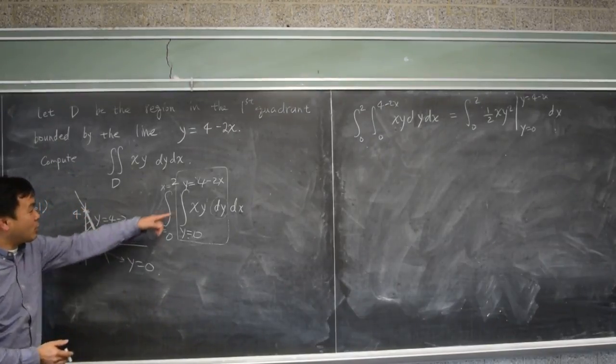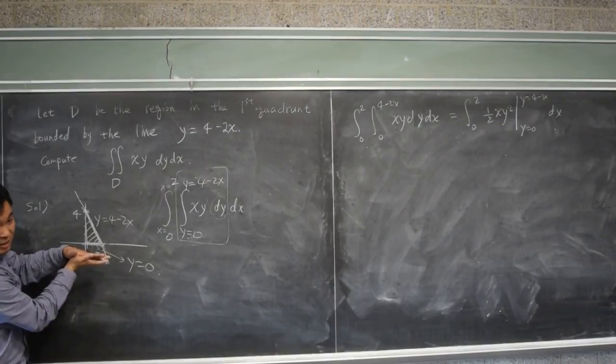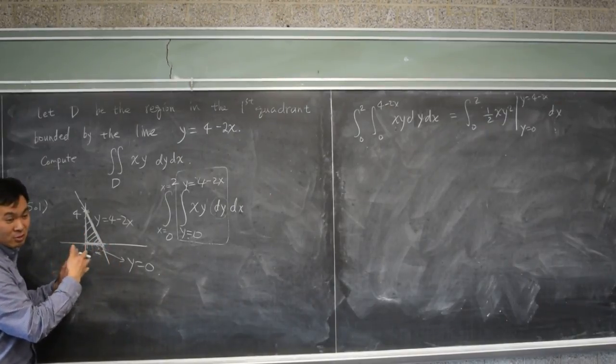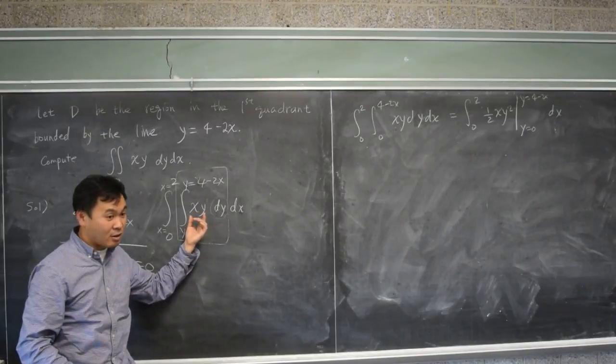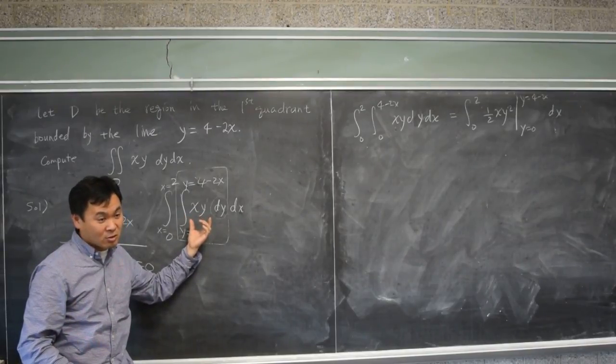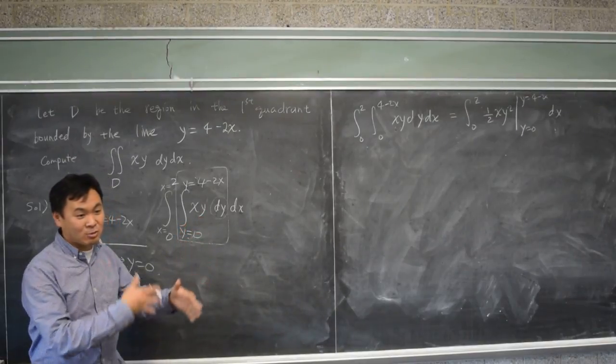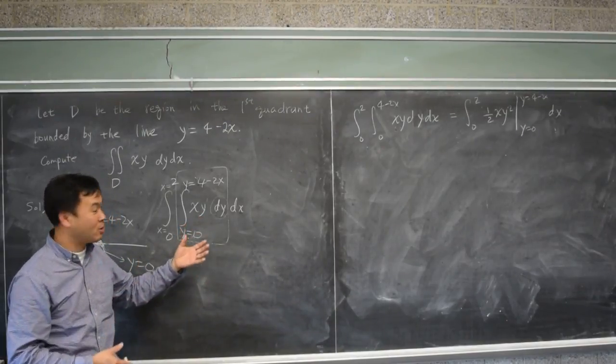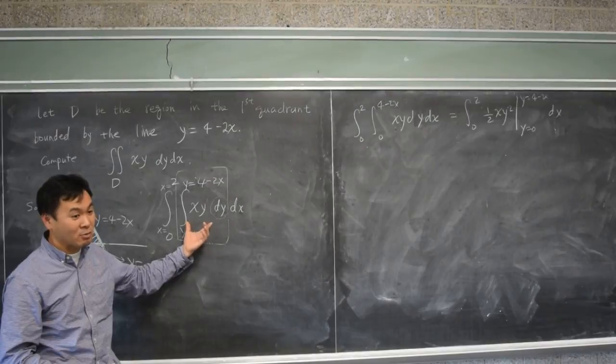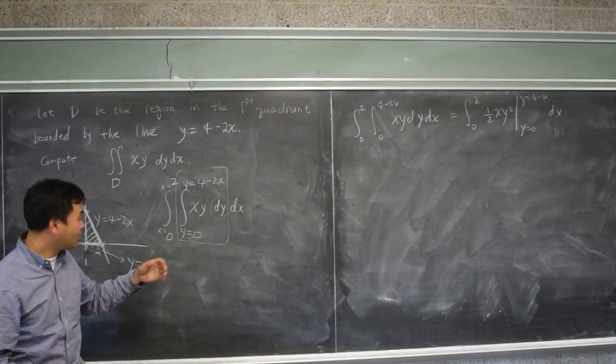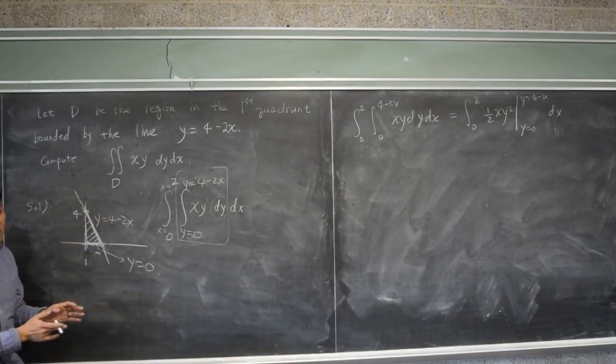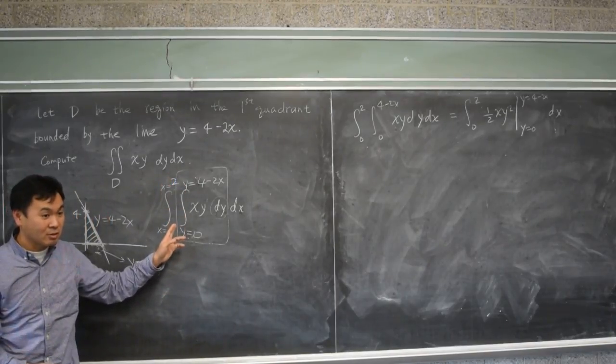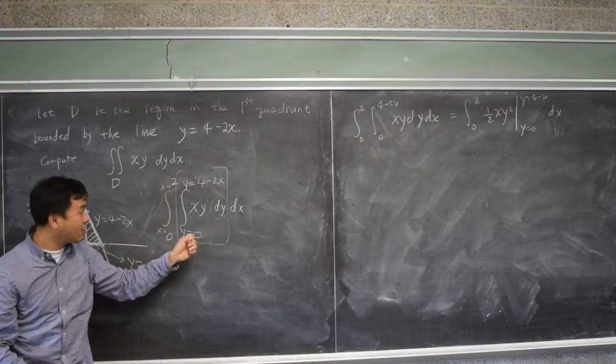So your question is why are we doing 0 to 2 instead of going from 0 to this line, right? The reason is that once you integrate it, it becomes a one-dimensional integral. See, if you integrate, you get a function of x only. So it's one variable function. So you're like back to calculus 2 where you have a single variable function. So that's why once you're integrating, the last one will have numbers. The last one will always have numbers.